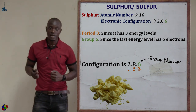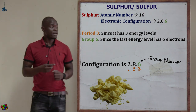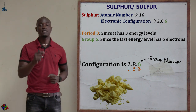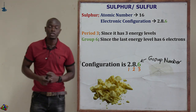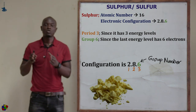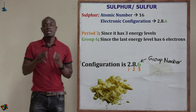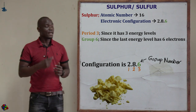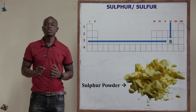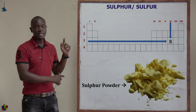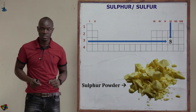Since the last digit in the configuration is six, sulfur is in group number six. Since it has three energy levels, it is in period number three. So sulfur is in group six and period three of the periodic table.